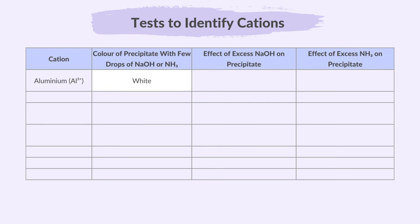For aluminium ions, a white precipitate forms with a few drops of sodium hydroxide or ammonia. It dissolves in excess sodium hydroxide to form a colourless solution, but does not dissolve in excess ammonia.